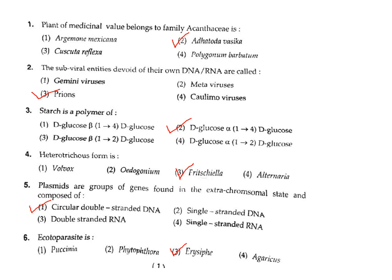Question 2: The sub-viral entities devoid of their own DNA or RNA are called what? Sub-viral particles — those smaller than viruses that do not have their own DNA or RNA — are called virions or prions. The correct answer is Option 3.